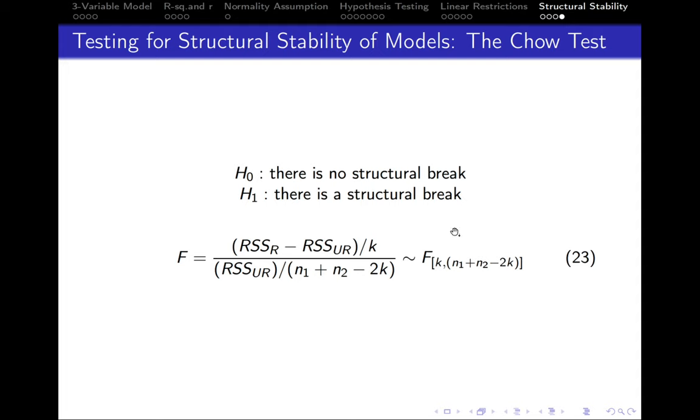From this part we get that this test follows F distribution. In the numerator we've got k degrees of freedom, and in the denominator we've got n1 plus n2 minus 2k degrees of freedom.